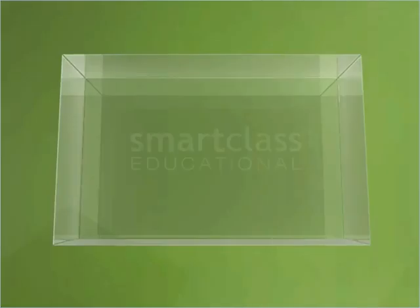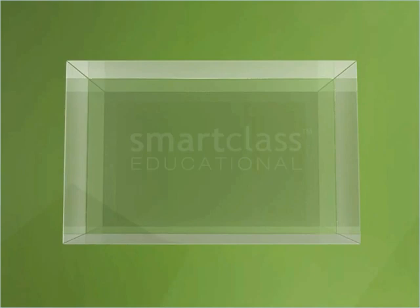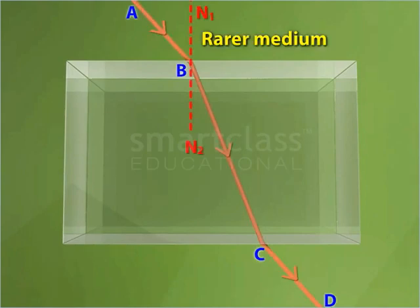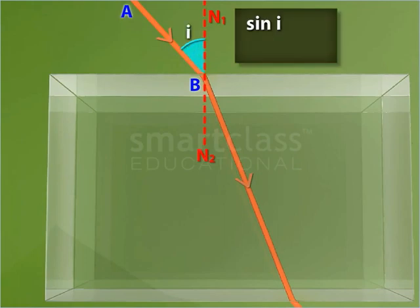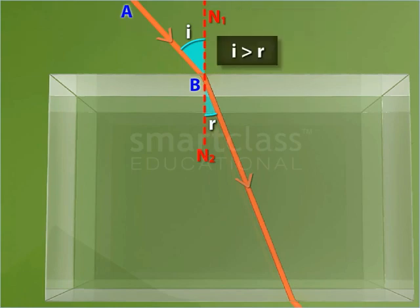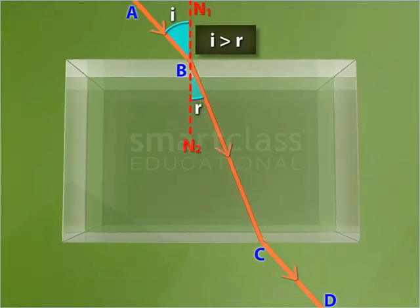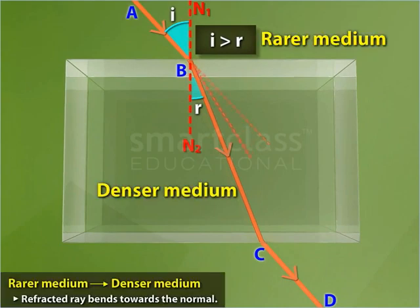From the activity, you can observe that if a ray of light passes from a rarer transparent medium to a denser transparent medium, the ratio of the sine of the angle of incidence and the sine of its corresponding angle of refraction is always greater than 1. So the angle of incidence is greater than the angle of refraction. This signifies that the refracted ray bends towards the normal at the point of incidence.